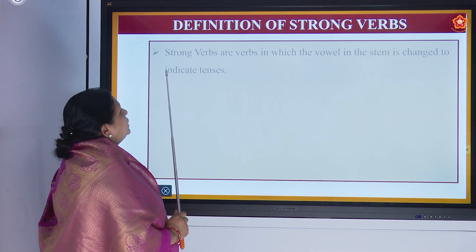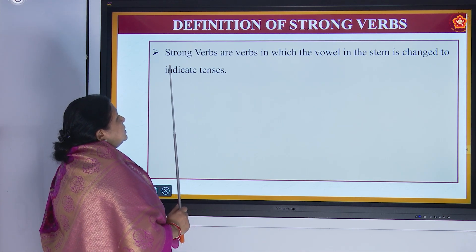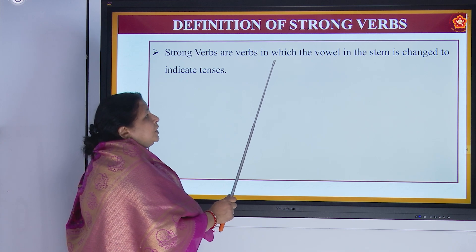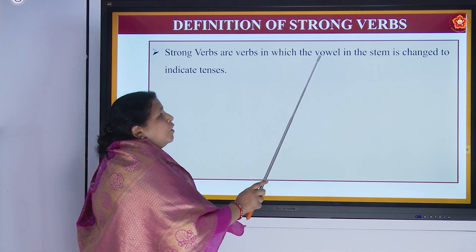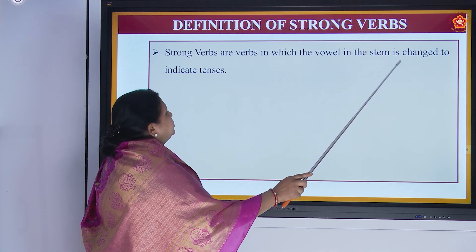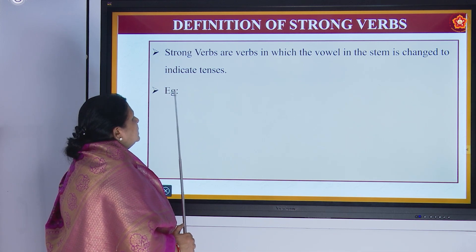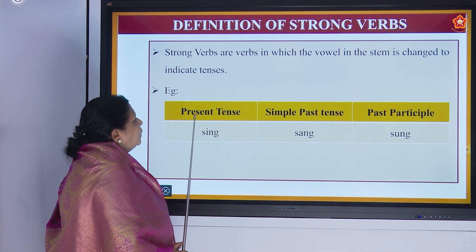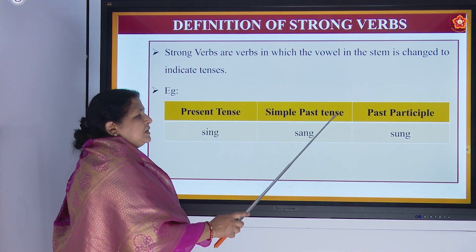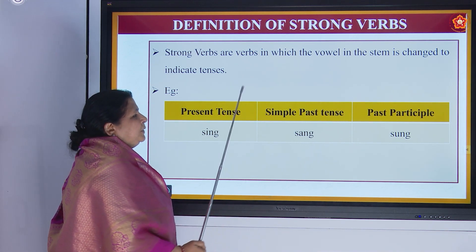Now let us see the definition of strong verbs. Strong verbs are verbs in which the vowel in the stem is changed to indicate tenses — for example, present tense, simple past tense, and past participle.